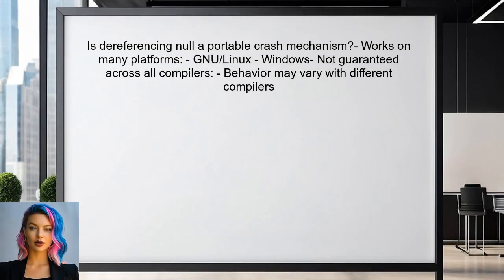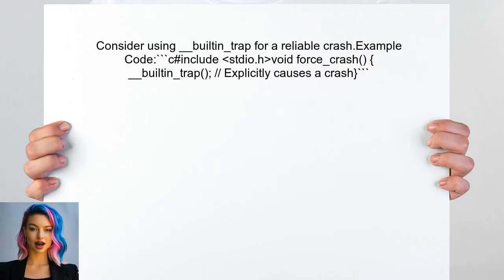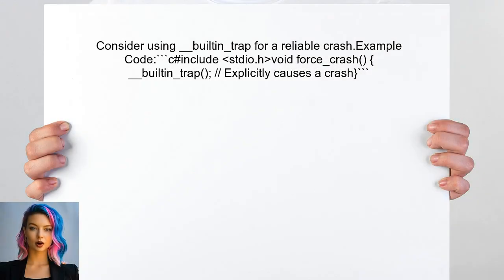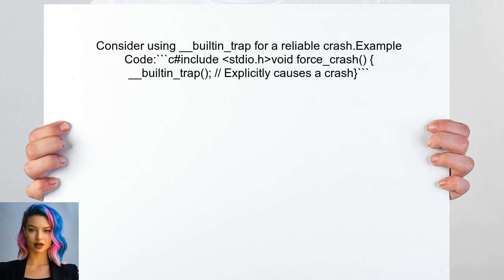Let's address the portability of dereferencing a null pointer as a crash mechanism. While it works on many platforms, this behavior is not guaranteed across all compilers or systems. For a more reliable crash across different environments, consider using the built-in function __builtin_trap. This function explicitly indicates a crash, ensuring consistent behavior.